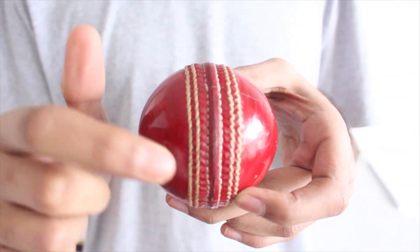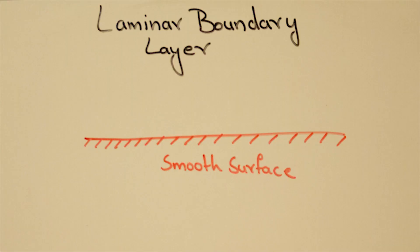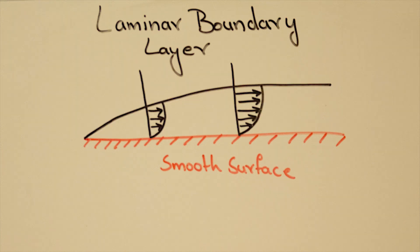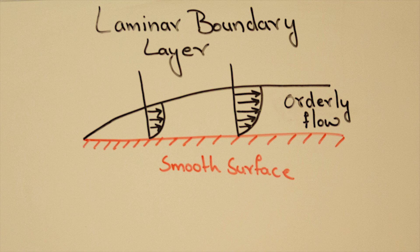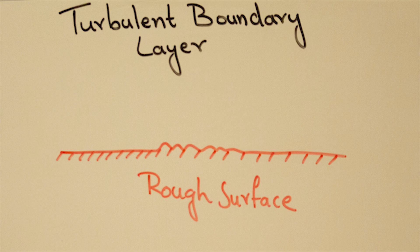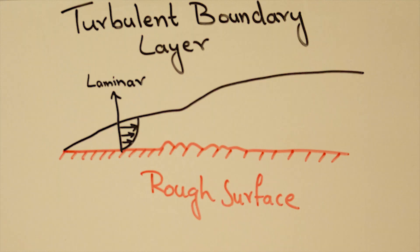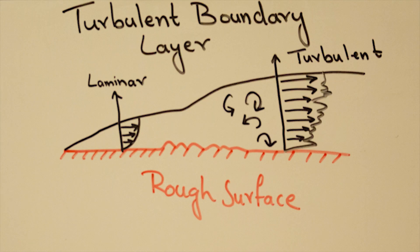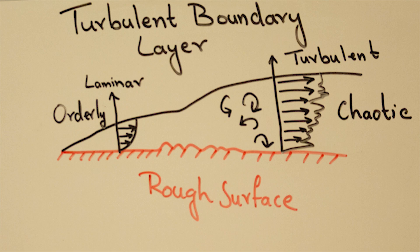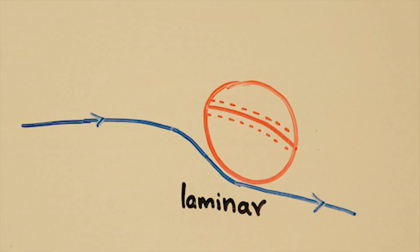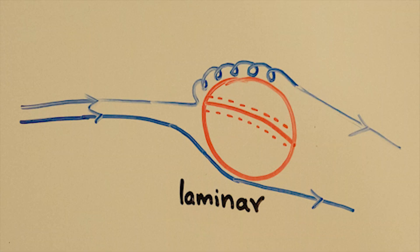A cricket ball is nothing but a sphere moving through the air, but the magic of swing bowling happens because of the stitches on the ball called the seams. When flowing air meets a surface, friction causes a boundary layer to form. On a smooth surface, the boundary layer is orderly and parallel — this is called laminar flow. But if the surface is rough, the flow is agitated and becomes chaotic and turbulent. This turbulent boundary layer has more energy. The seams on a cricket ball cause one side of the air to become turbulent while the other side remains laminar.